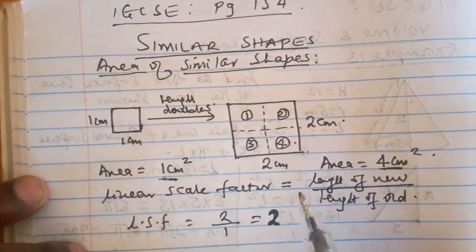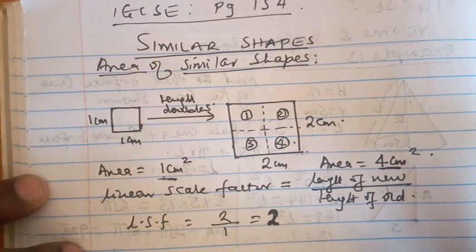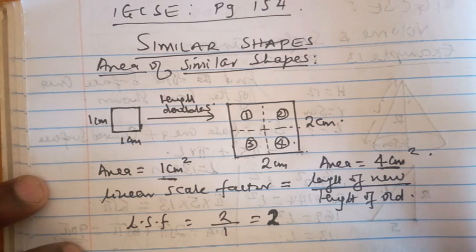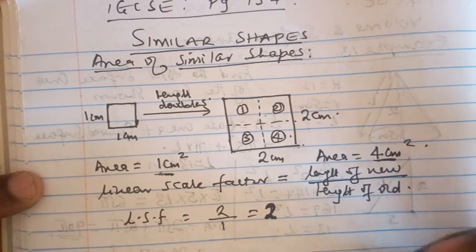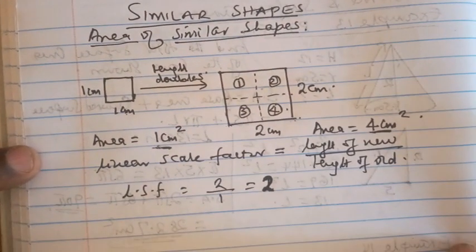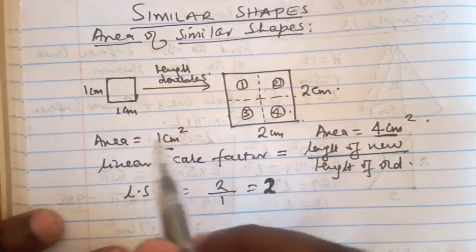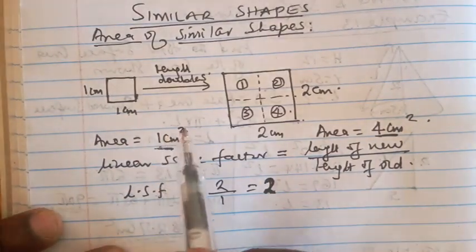Before we go on — similar shapes are shapes that look the same even though they are not of the same size. They are very similar; they look very, very similar.